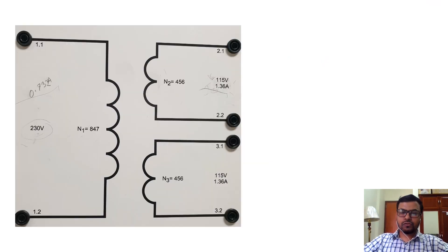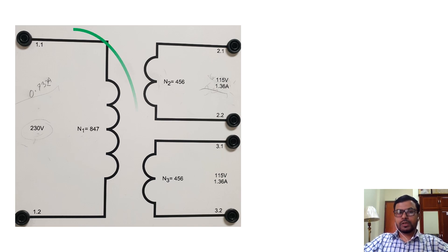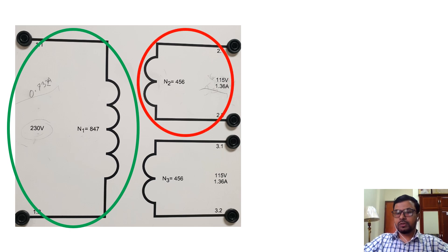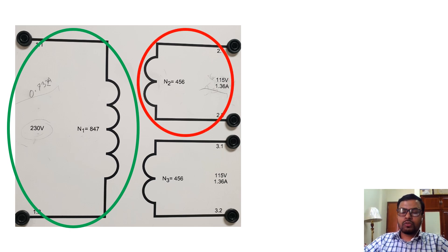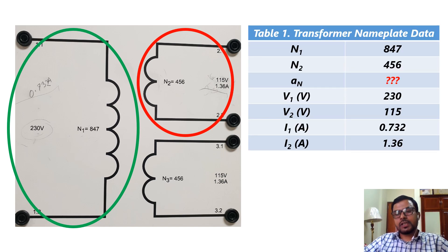This transformer will be used in this experimentation. As you can see, it has three windings. The left side winding will be used as the primary, whereas the right side top winding will be used as the secondary. The third winding will not be used at all. This table shows us the nameplate data of the transformer — for example, the turns ratio, primary and secondary rated voltages and currents.